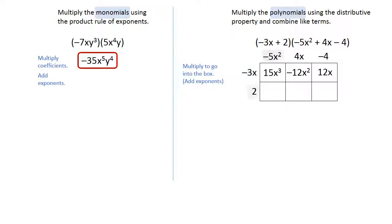Along the bottom, the first box, we're going to do 2 times negative 5x squared, and that is negative 10x squared.